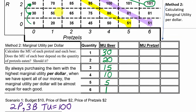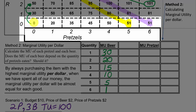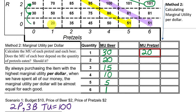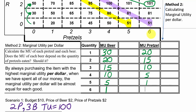Now let's do the exact same thing for pretzels. Let's pick any row - let's pick the bottom row. We start with no happiness, eat one pretzel, and that takes us to 20 happiness - additional utility is 20. The second pretzel takes us from 20 to 35, so additional happiness is 15. The marginal utility for the third pretzel is 10, taking us up to 45. Then 45 to 50 is an additional 5, 50 to 51 is an additional 1, and the sixth pretzel gives zero additional happiness.